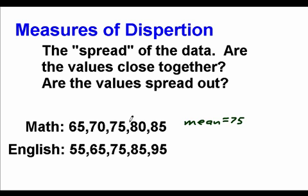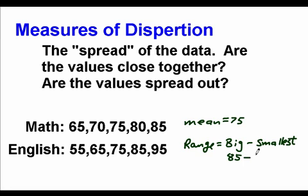And a few easy ones for dispersion would be the range. And the range is just basically big minus small. The biggest value that you have minus the smallest value you have. It's not a very powerful measurement, but the book talks about it.